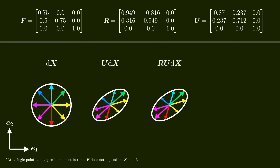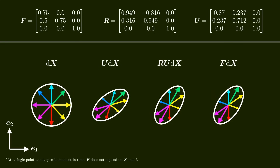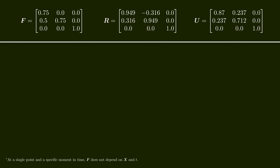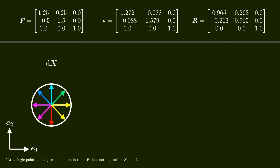The polar decomposition reveals that the deformation gradient contains information about both rotation and deformation. With it, we can separate the rotation from the deformation, giving us R as a pure measure of rotation and U as a pure measure of deformation. Note that in contrast to the volumetric-deviatoric decomposition, the order of the matrices in the polar decomposition matters — in general, R times U is not equal to U times R. However, we can use another decomposition to decompose F into V and R, where V is a pure measure of deformation and R is again the rotation matrix. We call this the left polar decomposition, in contrast to the previous right polar decomposition. The difference is the order in which deformation and rotation are applied: in the left polar decomposition, we first apply the rotation and then the deformation.